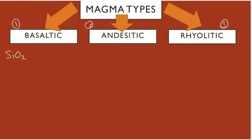Basaltic is going to have a lower amount of silica by weight — between 50 and 60 percent. Andesitic falls between 60 and 70 percent. Rhyolitic will be the highest at 70 percent and above — up to around 75 or even close to 80 percent, though that is very rare.